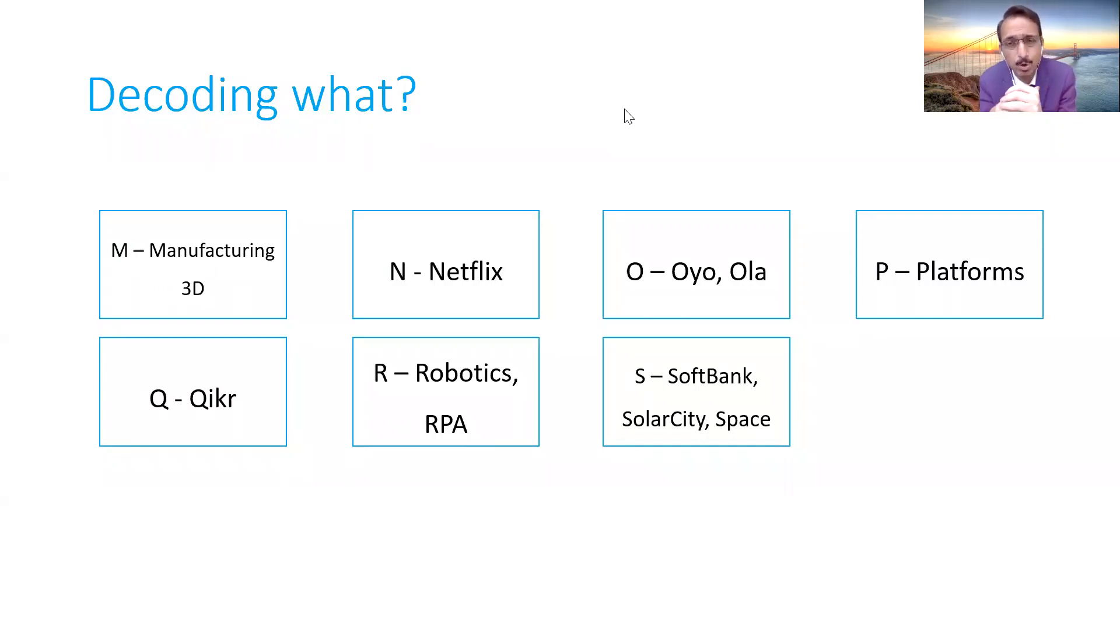Then S, I would say, stands for Space. Friends, till now most of us talk about manufacturing in India, China, Taiwan, Bangladesh. Now they are talking about manufacturing in space - that is a new dimension which is coming.